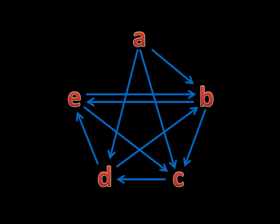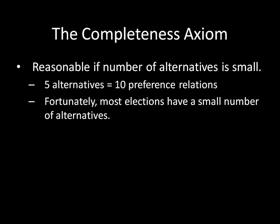In interpreting how this completeness axiom is useful, I think it's actually not that strong of an axiom if you have a reasonable number of alternatives, because the number of preference relations you need to state is relatively small. With five alternatives — A, B, C, D, and E — there are only ten preference relations you have to state for your preference relation to be complete. In most elections you have a small number of alternatives; in the last presidential election, there were only eight alternatives on the ballot. In many situations you're simply voting yes or no, so you just need to say whether you prefer yes or no or are indifferent between the two.